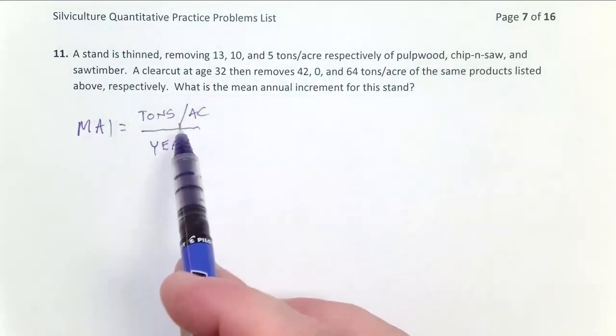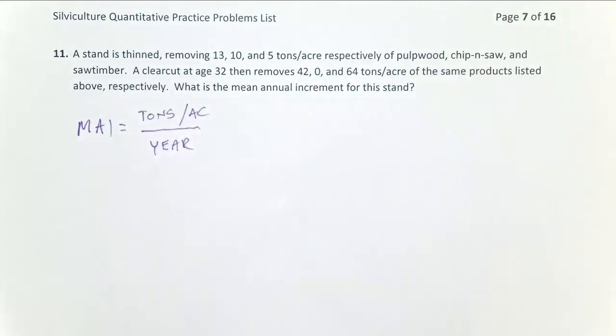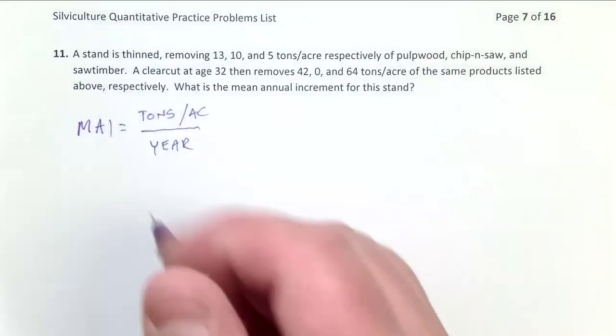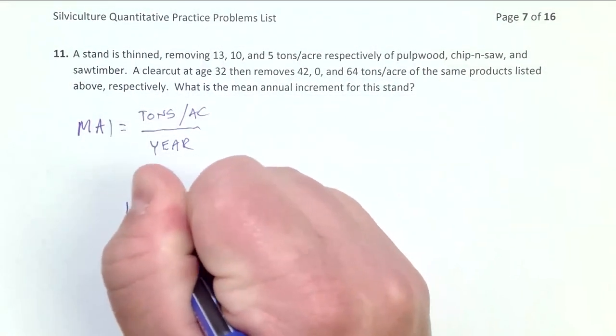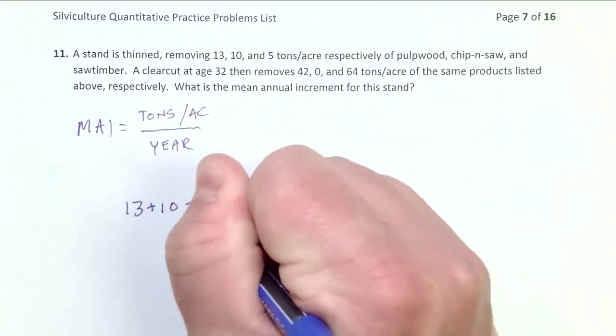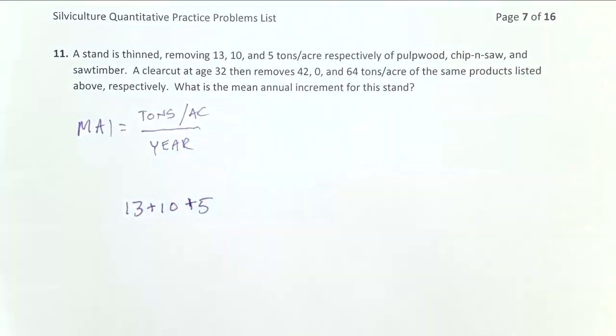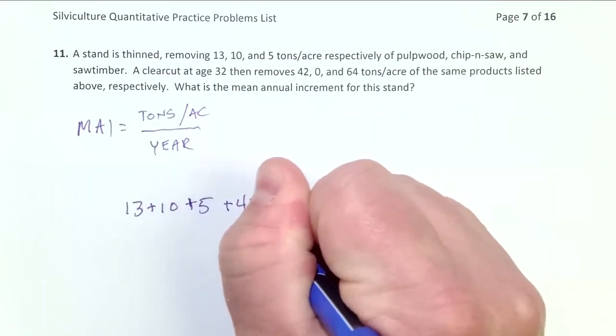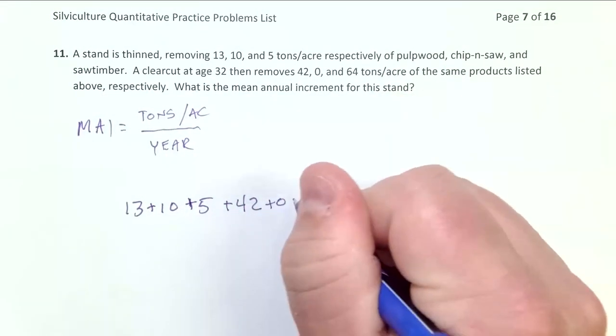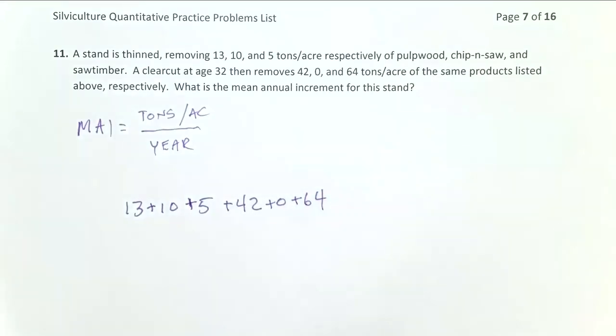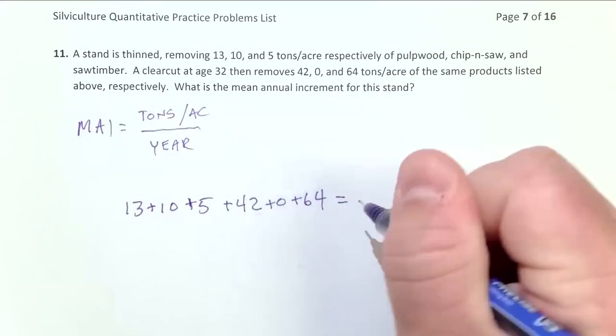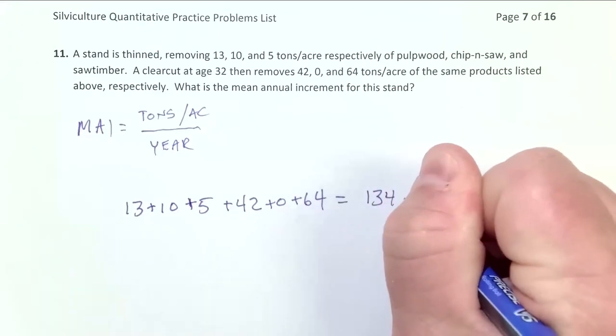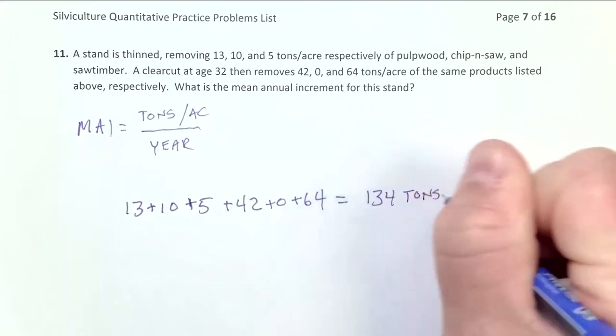Let me simply add up all the tons per acre that went on the log truck over the course of the rotation. If I start looking in my thin, I remove 13 plus 10 plus 5 tons per acre of my various products. And then my clearcut, I removed 42 plus 0 plus 64 tons per acre of my various products. So over the course of this whole rotation, I removed 134 tons per acre.